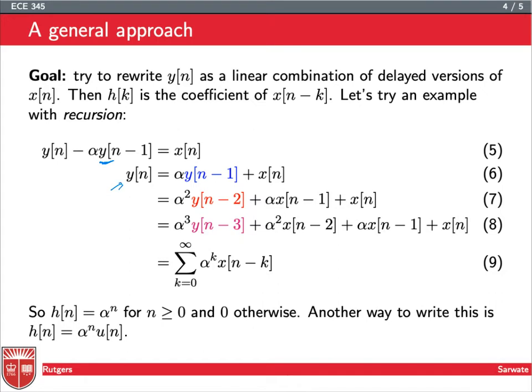We'll say y[n] equals alpha y[n-1] plus x[n]. I just moved this term over to the other side. Now what do we do? We substitute this thing into here. We take this y[n-1], and according to this formula, it's equal to alpha y[n-2] plus x[n-1]. I'm just replacing n here by n-1. So then this n-1 becomes n-2, and this n becomes n-1. And I just plug that in.